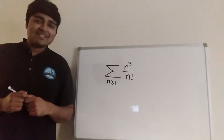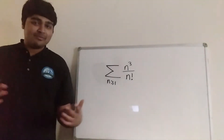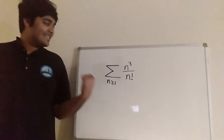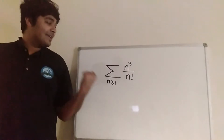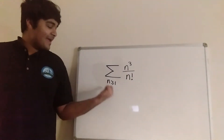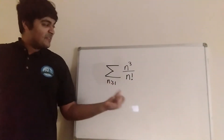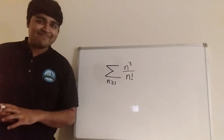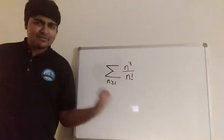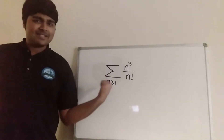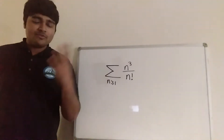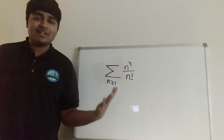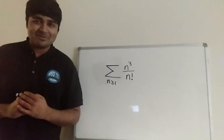Hi, thanks for joining me. Today I'm taking a request from a viewer. I'm going to be evaluating this infinite sum here, the sum from n equals 1 to infinity of n cubed over n factorial. If you want to have a go at evaluating this sum, pause the video now and give it a go for yourself, and I'm going to jump straight into a solution.